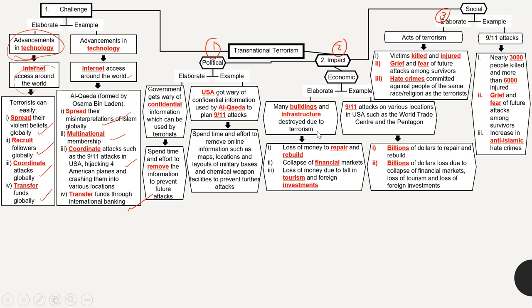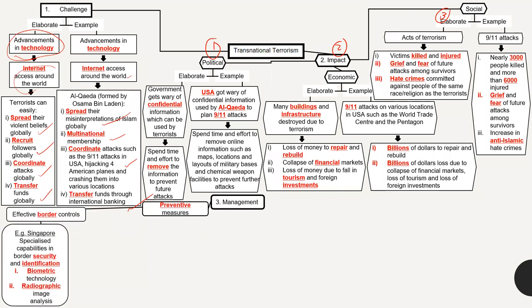When terrorists attack infrastructure, it costs a lot of money to repair. When the Twin Towers collapsed on 9/11, there was a very severe impact — financial markets were affected, people thought the country was unsafe, and investments were withdrawn. The 9/11 attacks cost billions of dollars in damage. For the social impact, people may fear terrorism and distrust one another. You might become suspicious of your neighbors or certain ethnic groups. After 9/11, Muslim communities around the world faced increased suspicion and some experienced hate crimes.